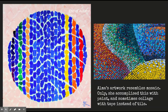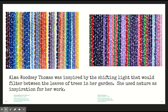This painting is called End of Autumn, 1960, and it was painted in 1968. Alma Woodsy Thomas was really inspired by her garden and by nature, and these paintings are representations of that. She was inspired by the shifting light that would filter between the leaves of the trees in her garden, and she used nature as an inspiration for her work. This one on the left is called Spring Displays a Rock Garden, and this one on the right is called Flowers in Spring.